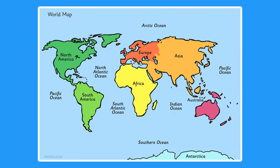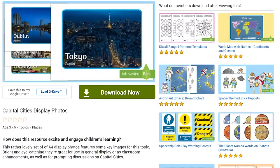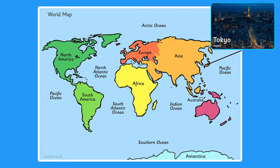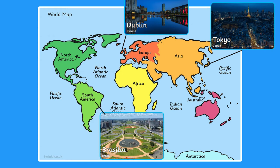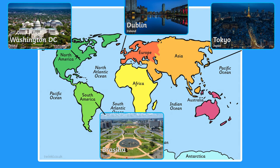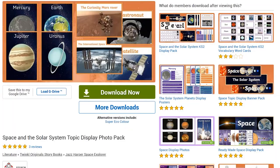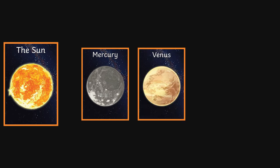Our third activity looks at placing locations on a map. Set out a blank map of the world and have your child place photos from the capital cities pack onto the map, helping them to research these countries and cities if they get stuck. The beauty of this activity is that once the child is done, you have a ready-made map display. You could also do this activity with these space topic cards — place the sun on the far left and see if your child can place the planets in the correct order.